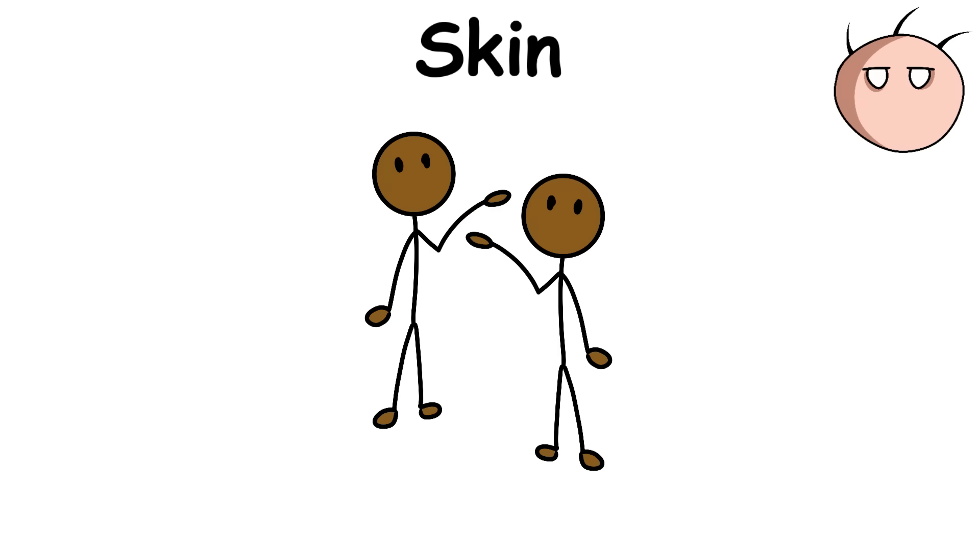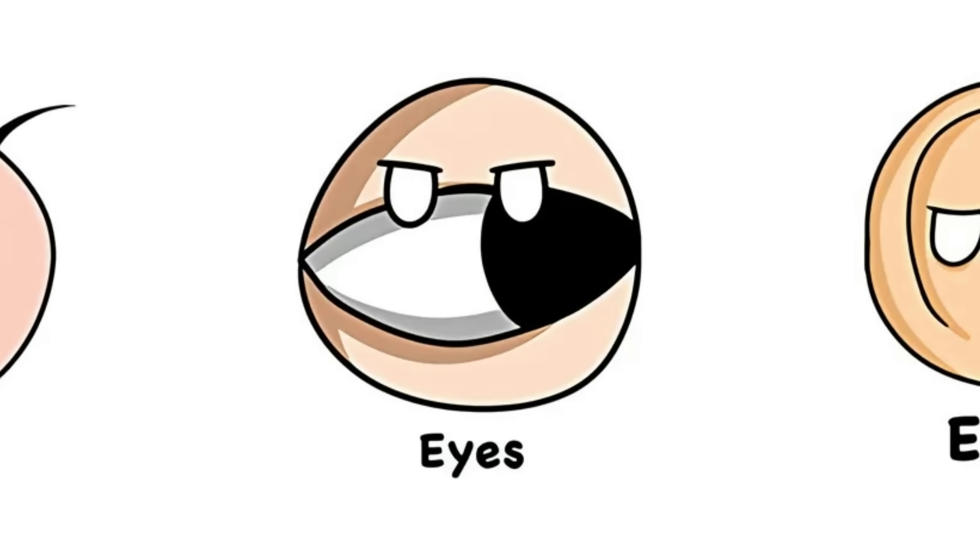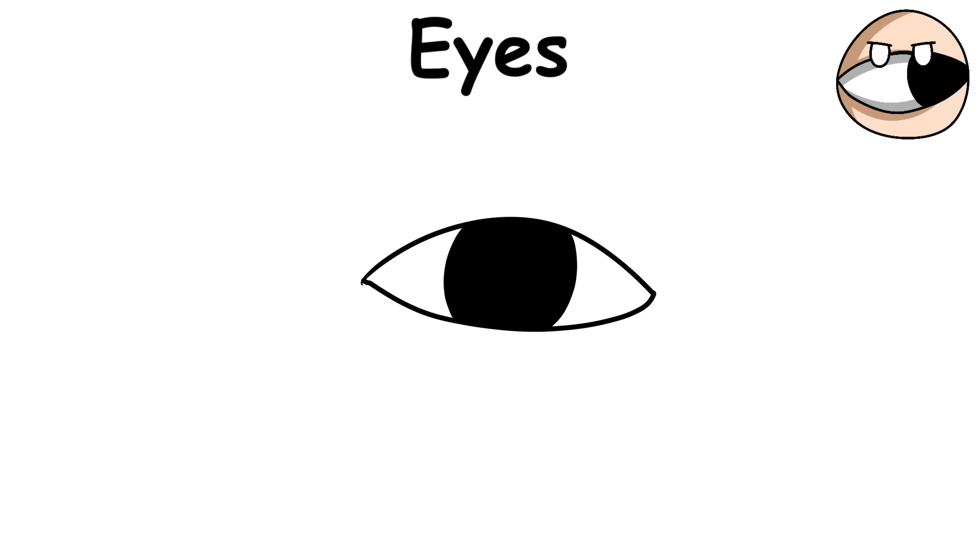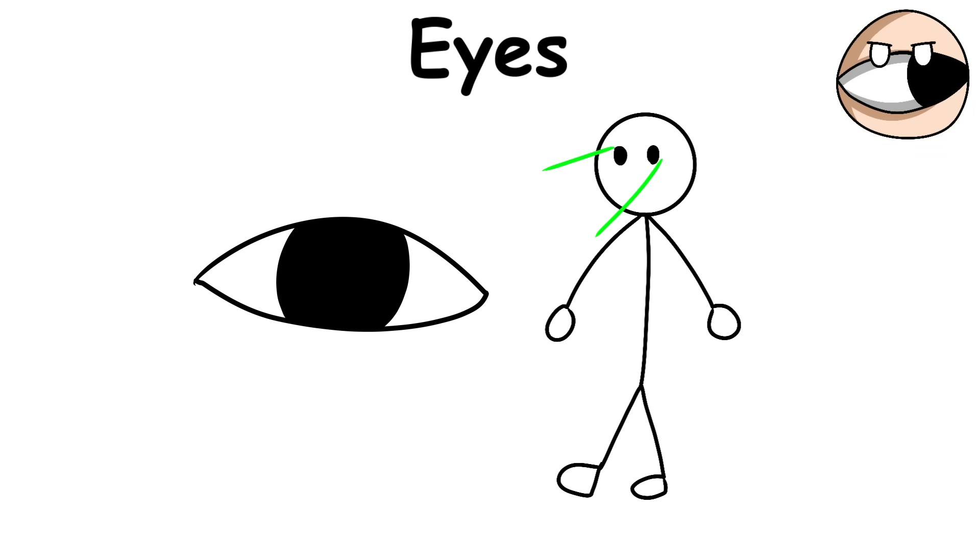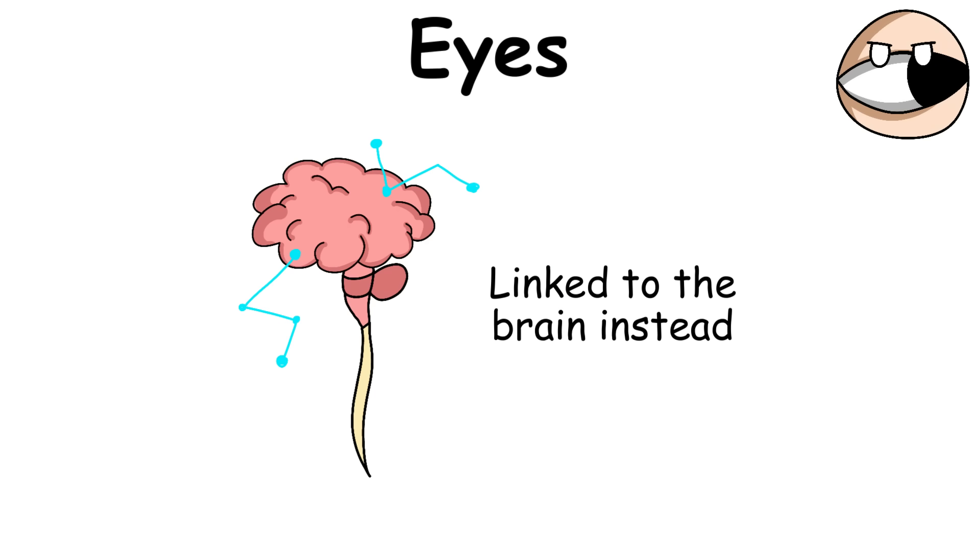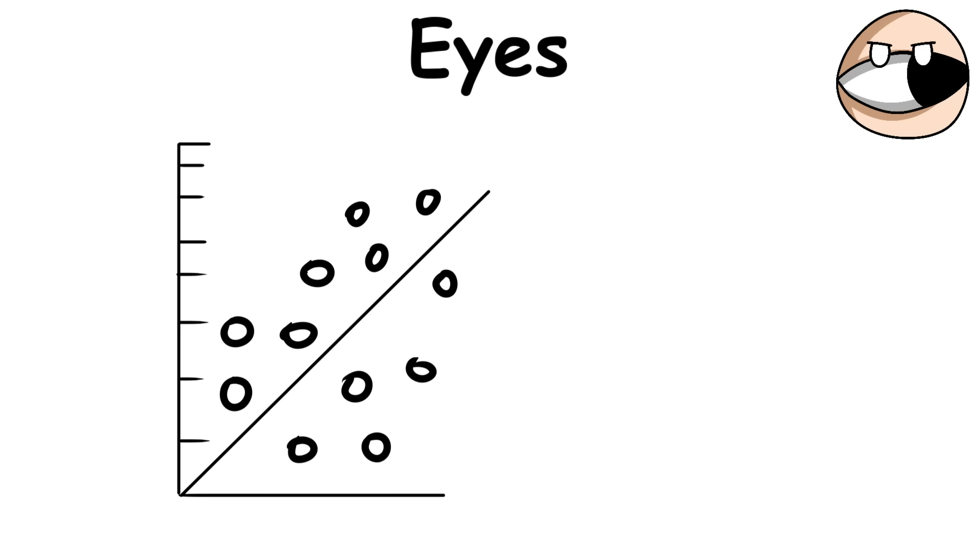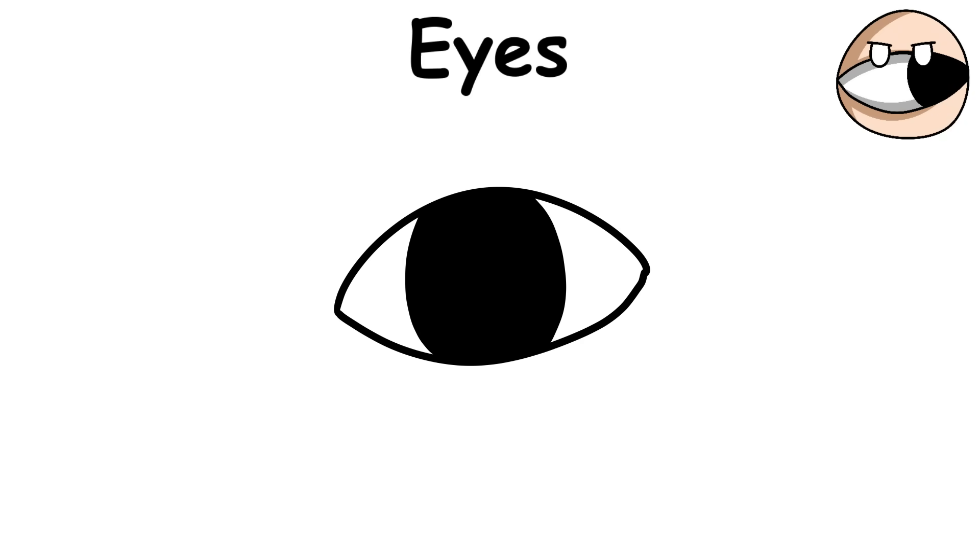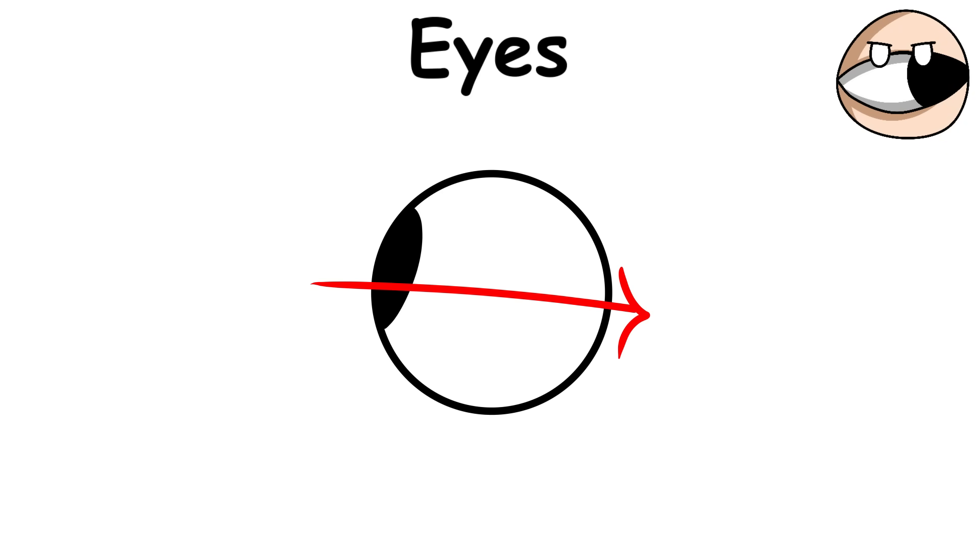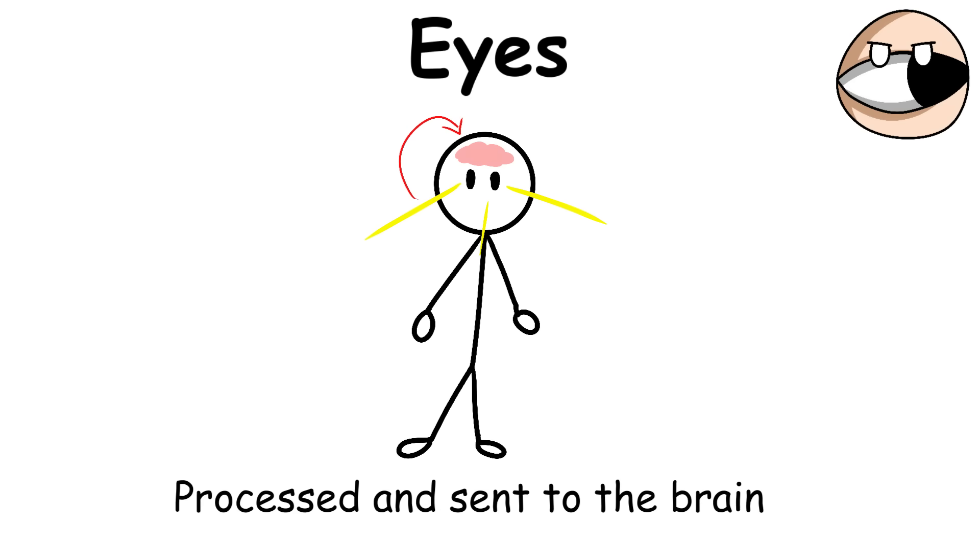As a sensory organ, the eyes are primarily responsible for vision. They say that the eyes are the window to a person's soul, but they're linked to the brain instead because there is a direct correlation between the two organs. The eyes capture visible light and allow it to pass through the eye's different components. The light is then processed and sent to the brain, which interprets the information and converts it into vision.